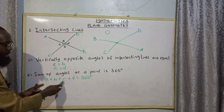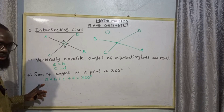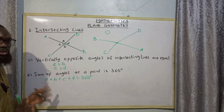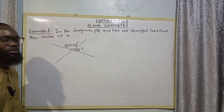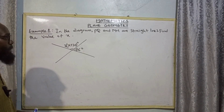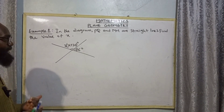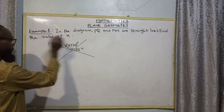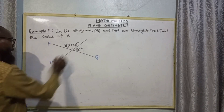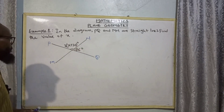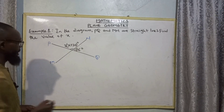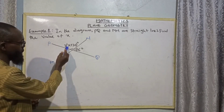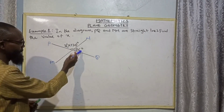Angle A plus B plus C plus D equals 360 degrees. So let's look at the application of these intersecting lines in solving questions. Example 1: In the diagram, PQ and MN are straight lines. Find the value of X. On line PQ we have the following angles: 2(x + 30) degrees and 66 degrees.